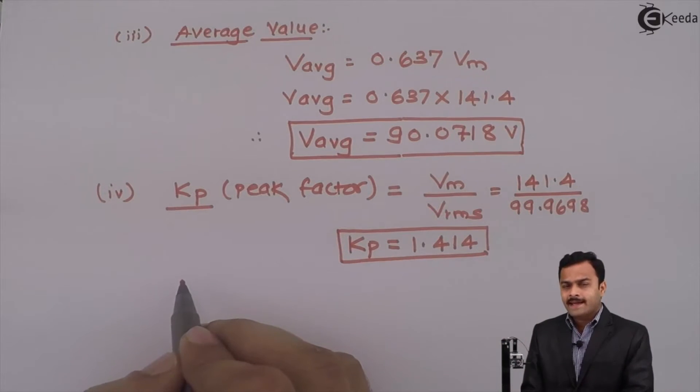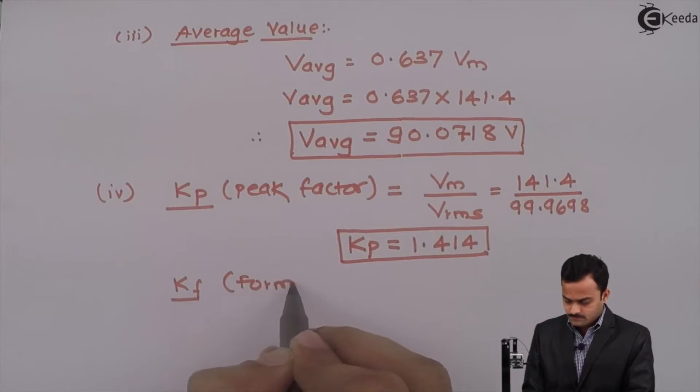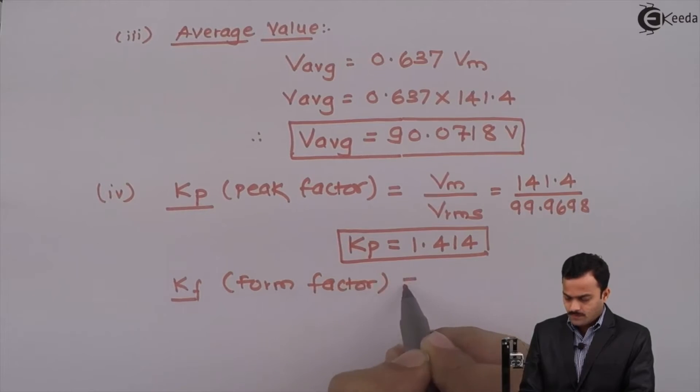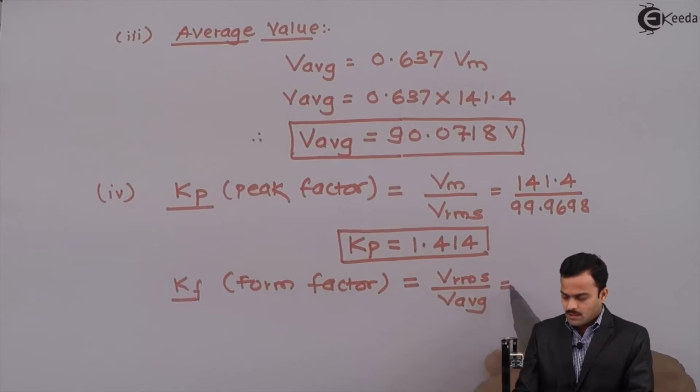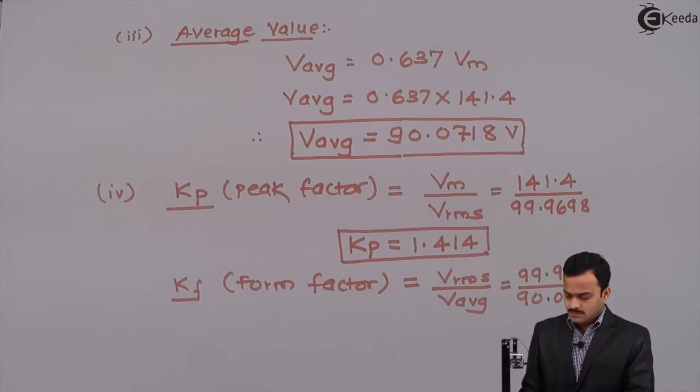Form factor is a ratio of RMS value to average value: RMS value is 99.9698 and average value is 90.0718. If I solve, I will get form factor as 1.11.